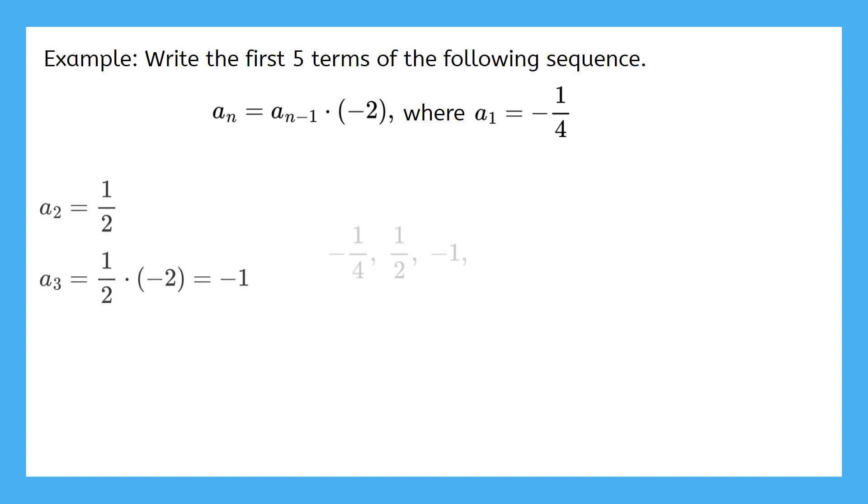We're almost done. There's two more terms to find, so pause the video now and give it a try. For a4, we again need to fill in the blank. We use our previous term, negative 1, to get that a4 is 2. Finally, for a5, we'll plug 2 into the formula to get negative 4.